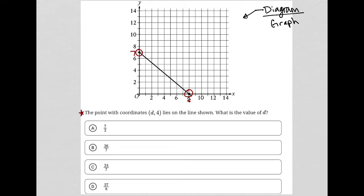The question says, the point with coordinates D, 4. Okay, so where is D, 4? 4 is the y, so right there would be, D would be here, basically, somewhere between 3 and 4. Lies on the line shown, what is the value of D? Okay, so I don't know the exact value of D just by looking at it, but I do know, what do I know?